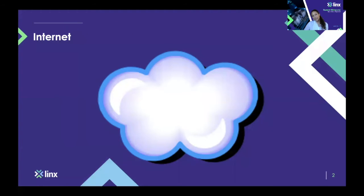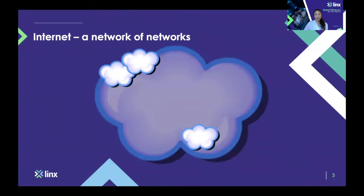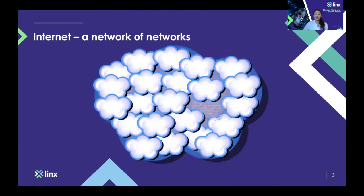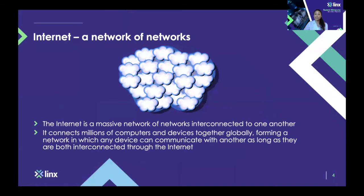When you imagine the Internet, it's easy to think of it as one homogenous entity. In fact, the Internet is a network of networks. That means it consists of many different networks interconnecting and exchanging traffic in order to form what we know as the global Internet. Any device on the Internet can reach any other part of the Internet, as long as it's part of a network that exchanges traffic with others on the public Internet.